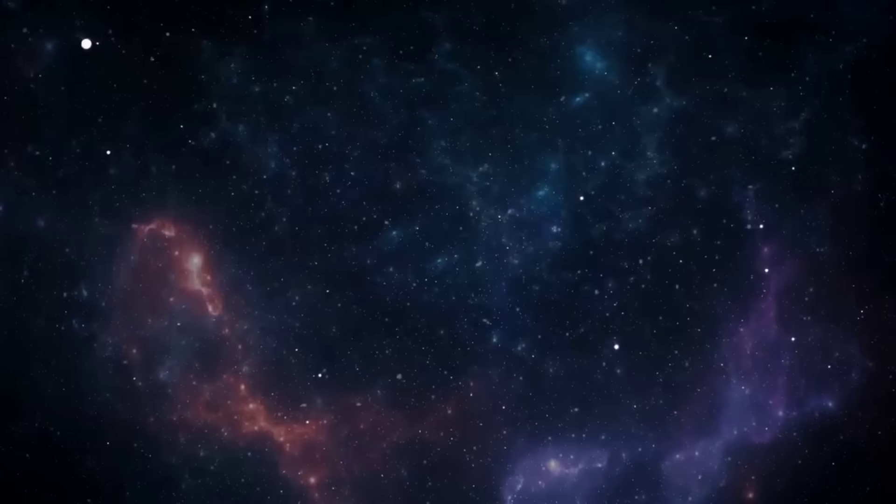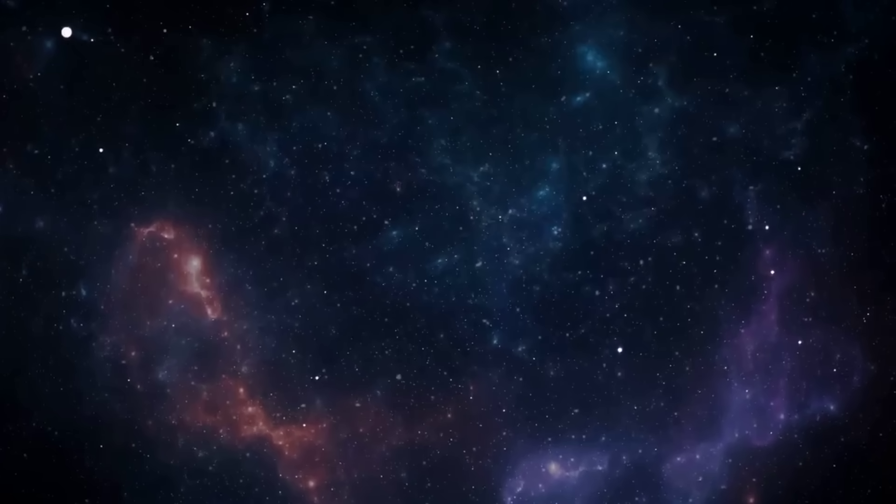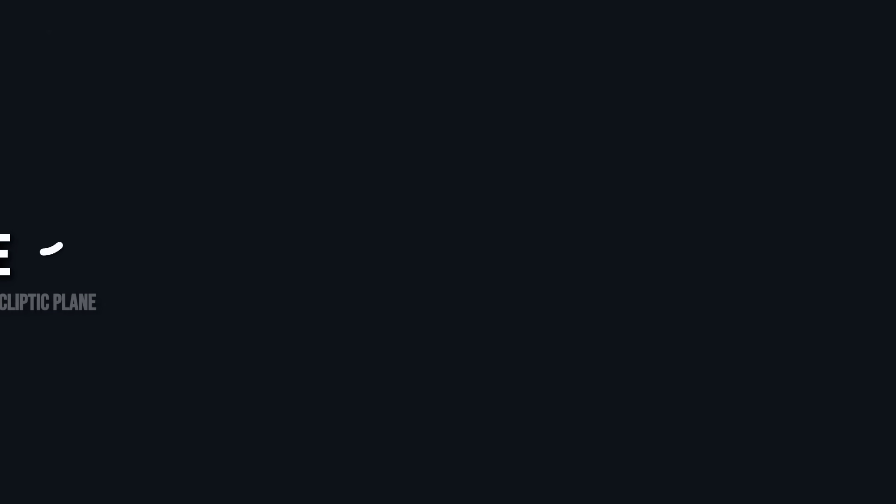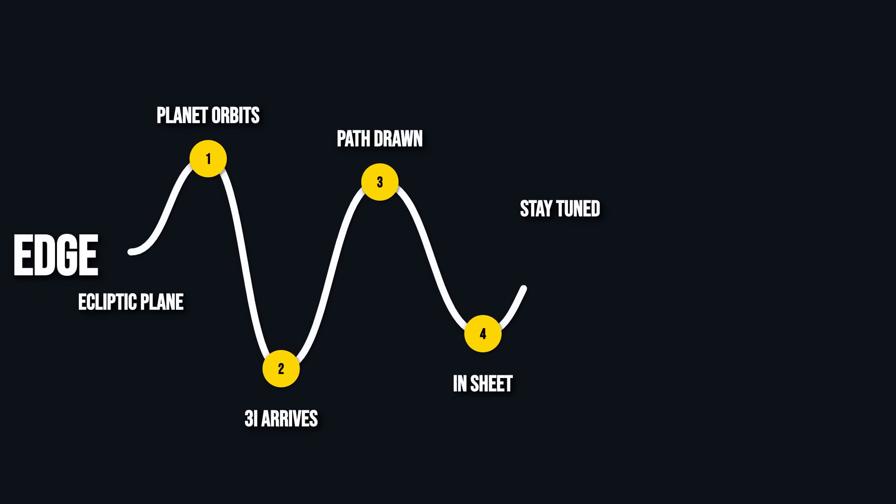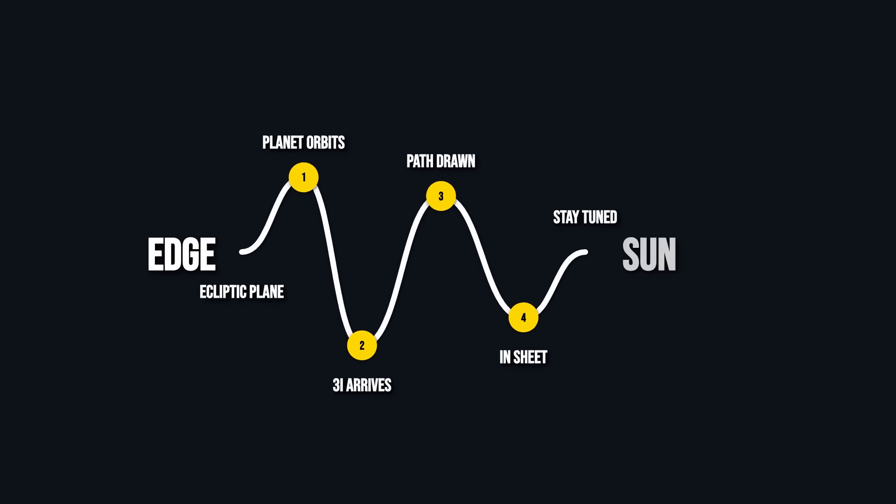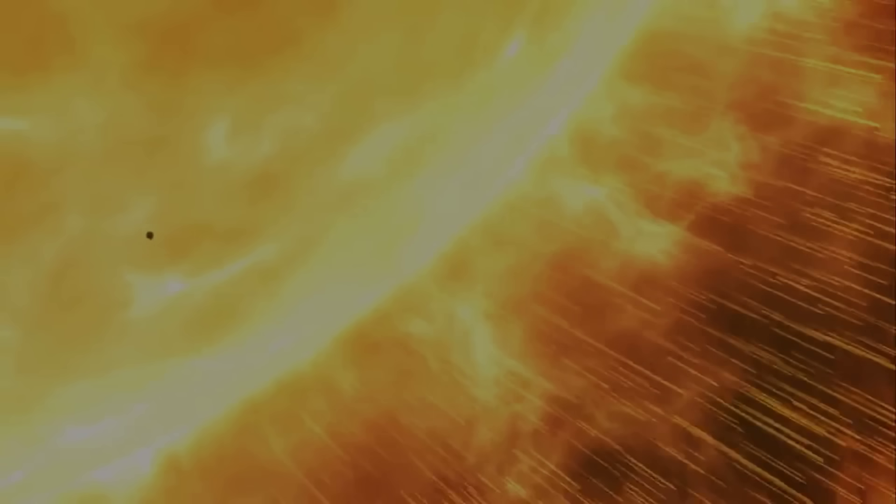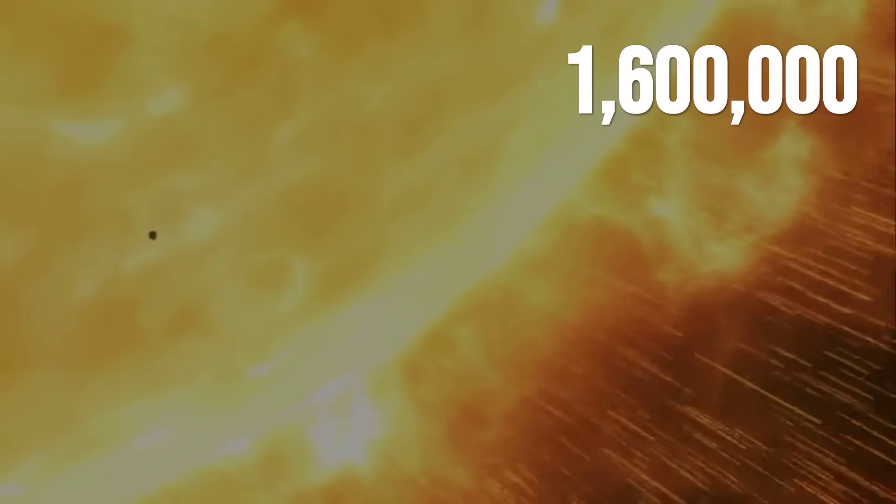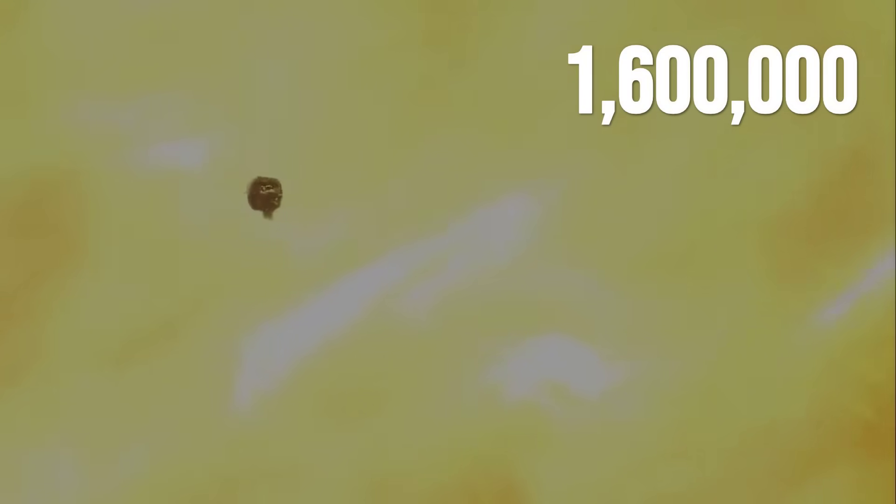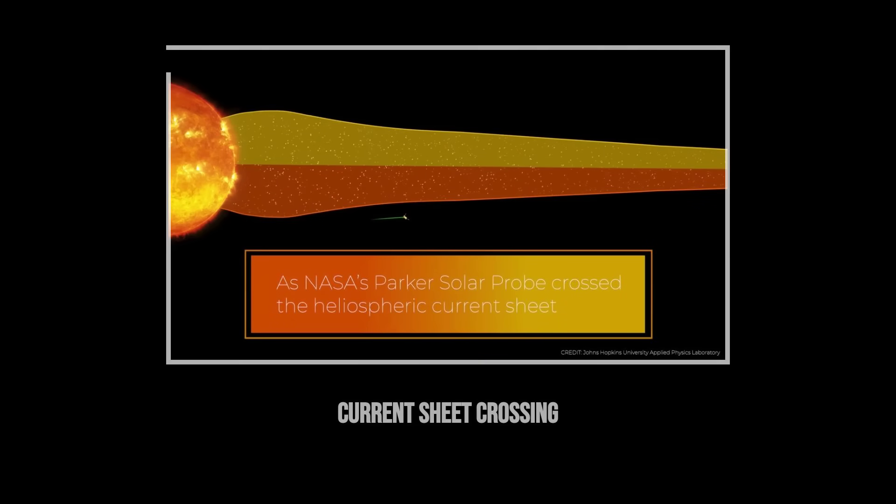In the lab, dusty plasmas self-organize into filaments and waves, sometimes in seconds. In space, the same physics plays out, but on a much grander stage. For 3I-Atlas, the real twist is its path. Nearly aligned with the ecliptic, it is embedded in the sun's main electric and magnetic environment for weeks. That means it spends more time inside the heliospheric current sheet, the vast undulating surface where the sun's magnetic field flips polarity.